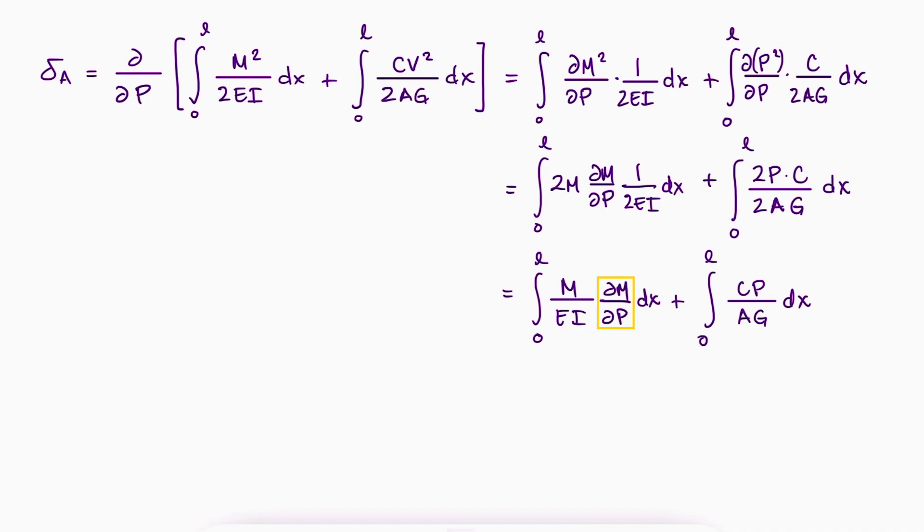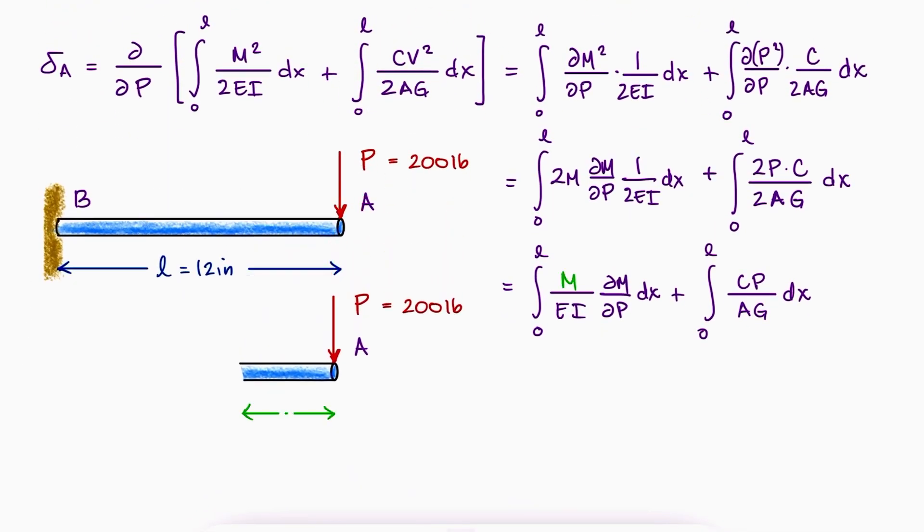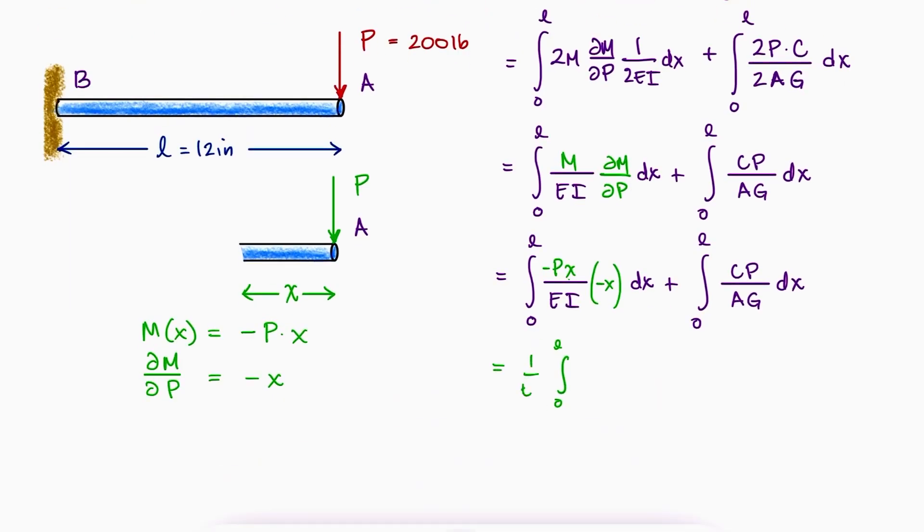However, for the moment, it will be important. To be able to calculate that first integral, we need m and the partial of m, meaning that we need the moment m as a function of x, which can be found by looking at a cut at any distance x from A. The moment m of x will be equal to negative p times x, and the partial with respect to p is negative x. Substituting m and partial m partial p, rearranging, integrating, and evaluating the integral...